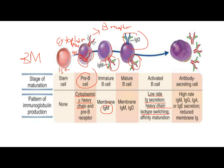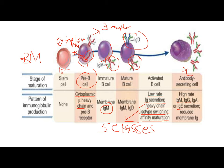After isotype switching and affinity maturation, the cell becomes an antibody-secreting plasma cell, with a high rate of IgM, IgG, IgA, or IgE secretion and reduced membrane immunoglobulin. Note the progression: the immunoglobulin starts in the cytoplasm, then appears on the membrane, then is secreted as antibodies.